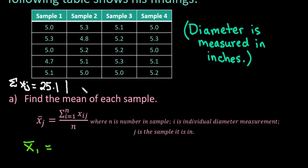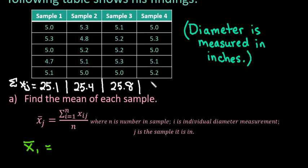Adding the next column gives us 25.4, then 25.8, and the last column sums to 25.6. These numbers were obtained by simply adding each column — for example, 5 + 10 + 15 + 20 + 25, and then looking at the decimal portions. That's how we got the values: we just summed each column.